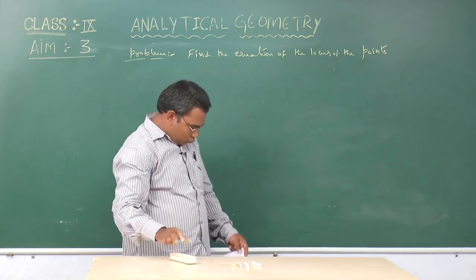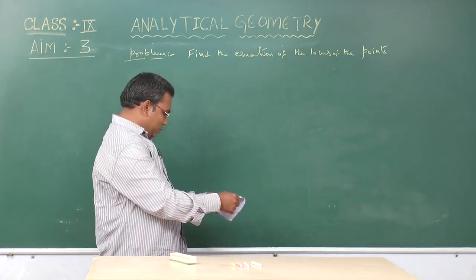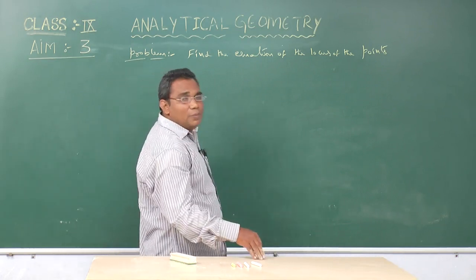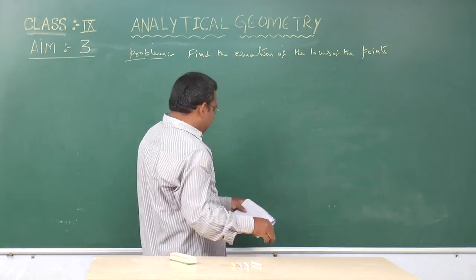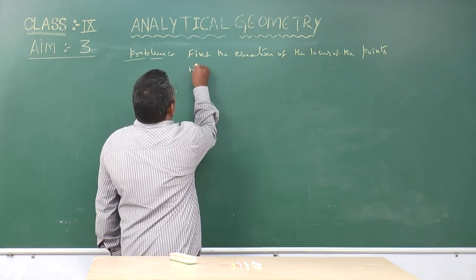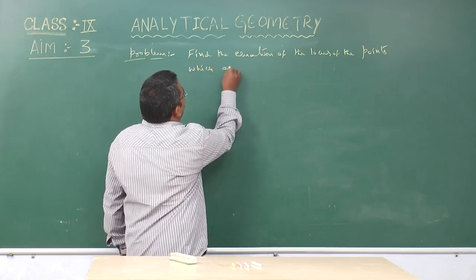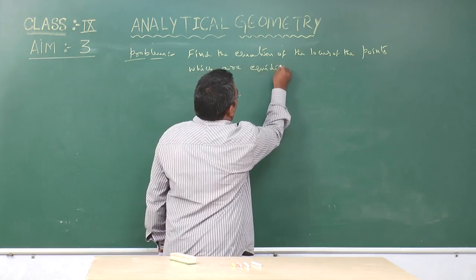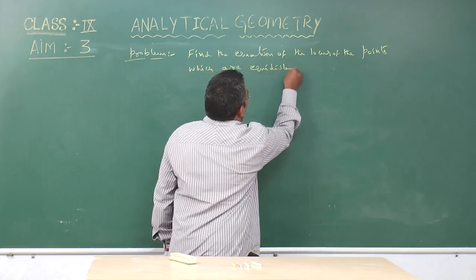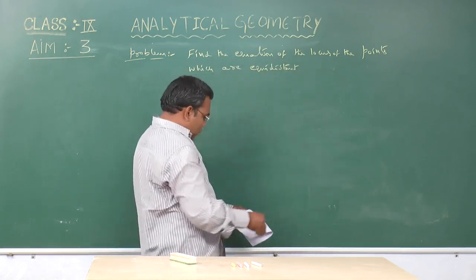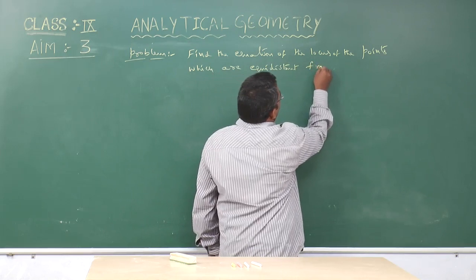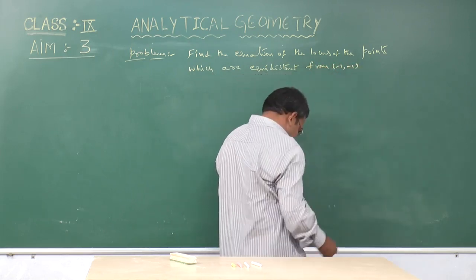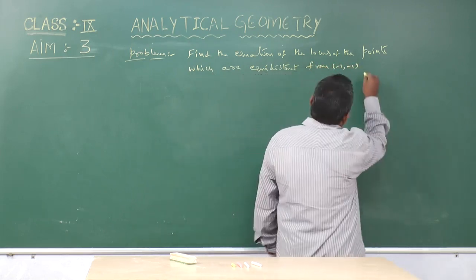Now one more problem is discussed. Find the equation of the locus of the points which are equidistant from (minus 1, minus 1) and (4, 2).